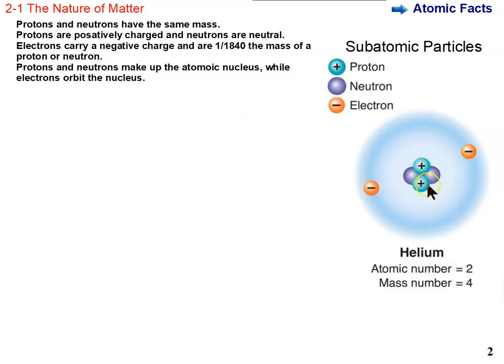Protons and neutrons make up the atomic nucleus. Not to be confused with the cell nucleus. Here we're talking about the nucleus of an atom, not the nucleus of a cell. Electrons orbit the nucleus, just like the moon orbits the earth and the earth orbits the sun. Electrons are kept in the atom by their attraction to the positively charged protons.